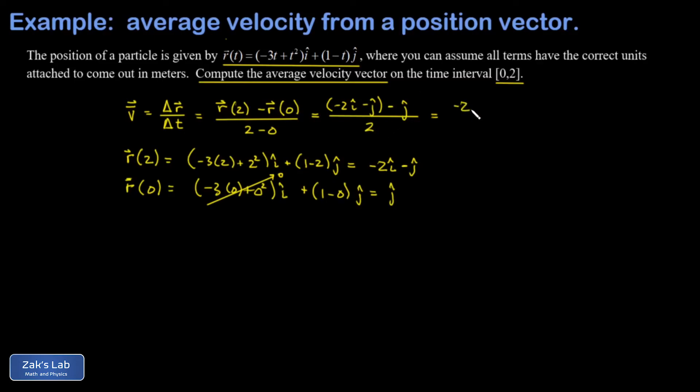So this gives me negative 2 i hat minus 2 j hat, all divided by 2. Which then simplifies to negative i hat minus j hat.